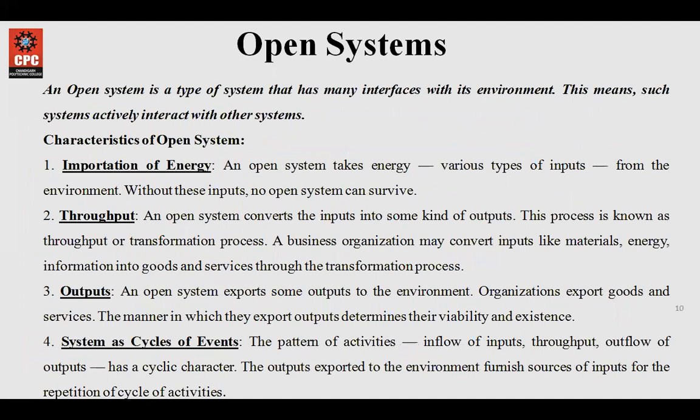Now, the different characteristics of an open system. Since every system existing in this universe is open, there is a typical flow of inputs and outputs across the boundary. Number one is importation of energy — it takes inputs from outside and delivers outputs to the system, then outputs to the environment. Then comes throughput, which is the transformation process that ensures the input given to the system is converted to an output. Output is basically what is extracted from the system — we give certain inputs and expect certain outputs.